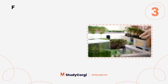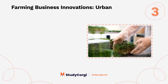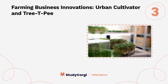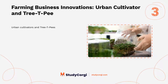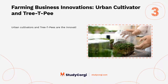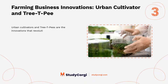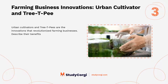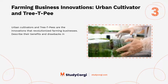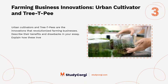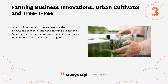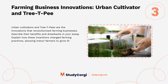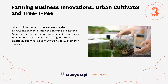Farming business innovations: Urban Cultivator and TreeTP. Urban Cultivators and TreeTPs are innovations that revolutionized farming businesses. Describe their benefits and drawbacks in your essay, and explain how these inventions changed farming practices, allowing indoor farmers to grow their own fresh and nutritious food.